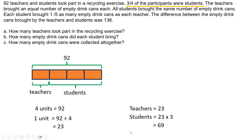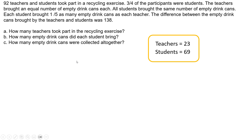Now we have found out the number of teachers and students, and we have also answered the first question: How many teachers took part in the recycling exercise? The answer is 23. Now we go to the next part: How many empty drink cans did each student bring? We look at the statement which gives a relationship between the number of empty cans brought by the students versus the teacher.